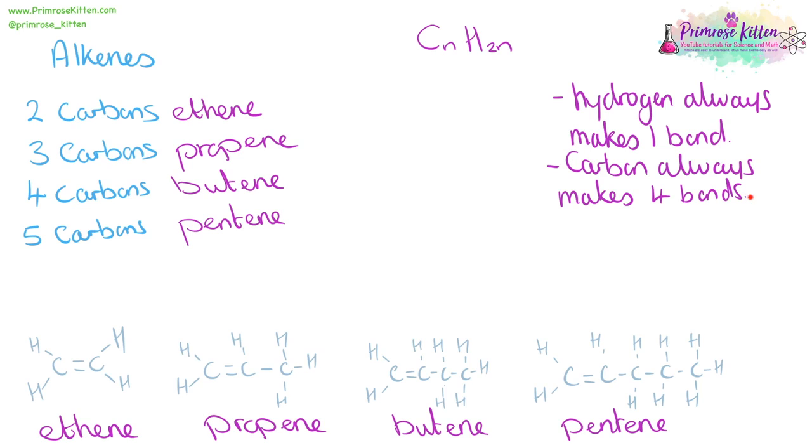When we are drawing things in organic chemistry, we need to remember that hydrogen always makes one bond and carbon always makes four bonds. So ethene down here, hydrogen is making one bond and our carbon is making one, two, three, four bonds. This second carbon is making one, two, three, four bonds.